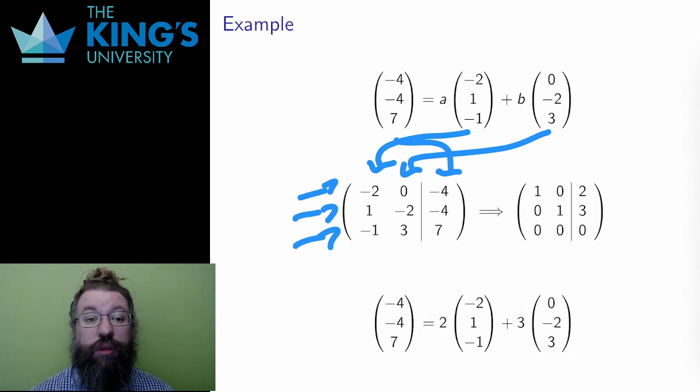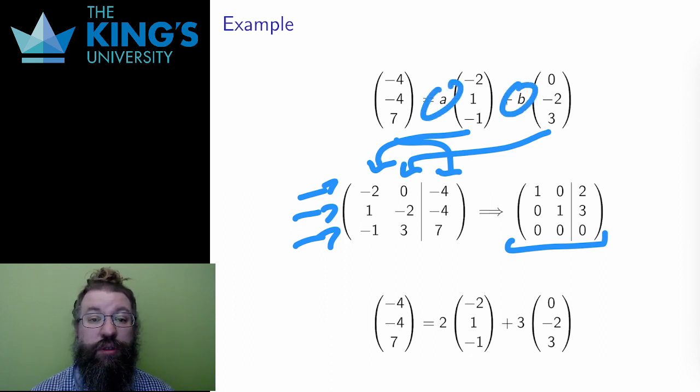Then I row reduce. This row reduction gives me the values of the unknowns A and B. In this case, A equals 2 and B equals 3. And therefore I have a solution. The vector (-4, -4, 7) is 2 times the first basis vector plus 3 times the second basis vector.